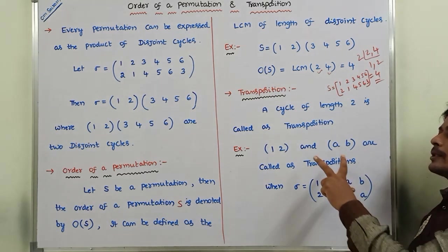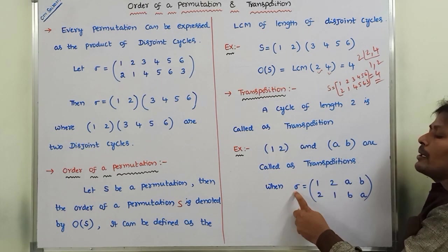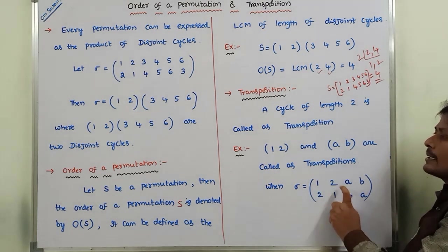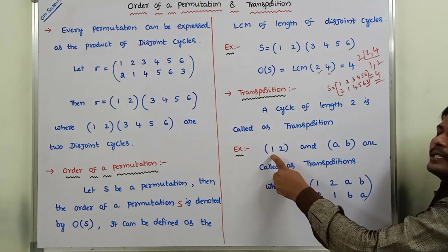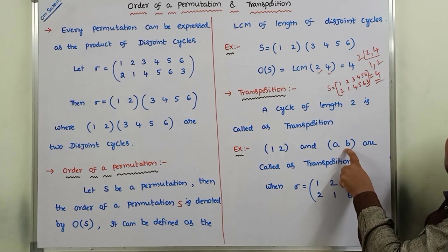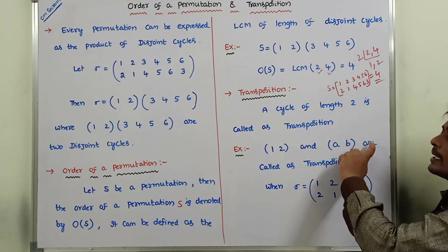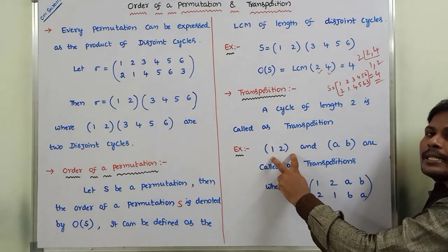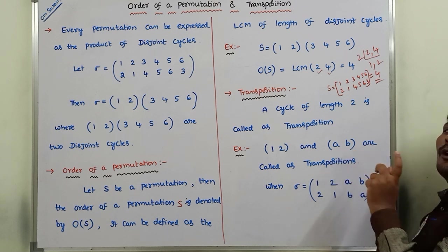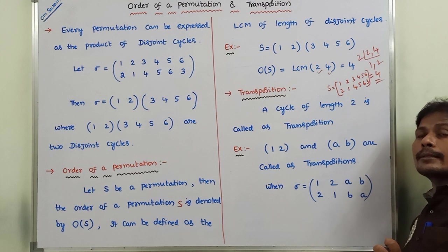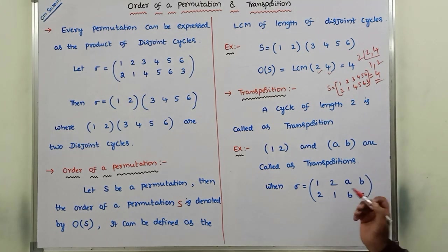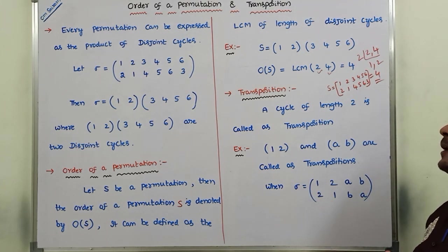These two cycles, (1 2) and (a b), can be obtained from the permutation sigma. In cycle (1 2), one maps to 2 and 2 maps to 1 — it contains two elements, so cycle length equals 2. In cycle (a b), a maps to b and b maps to a — it contains two elements, so cycle length equals 2. Whenever a cycle contains two elements, that is, length equals 2, it is called a transposition.